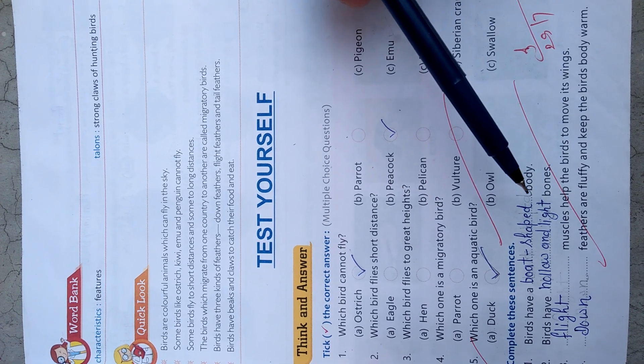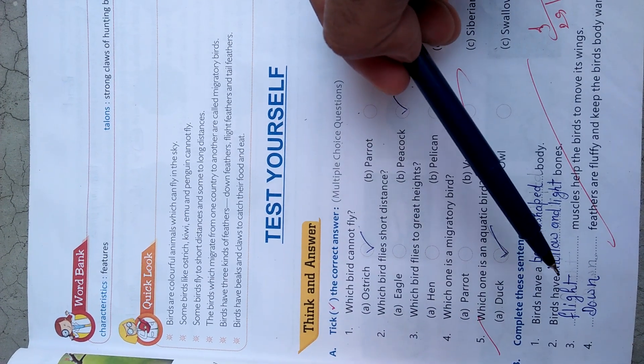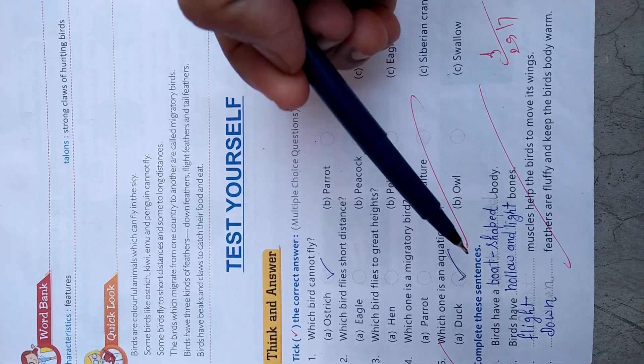Birds have a boat-shaped body — b-o-a-t-s-h-a-p-e-d. Write this with the help of your pencil, don't write with pen. Second: birds have hollow and light bones — h-o-l-l-o-w and light.